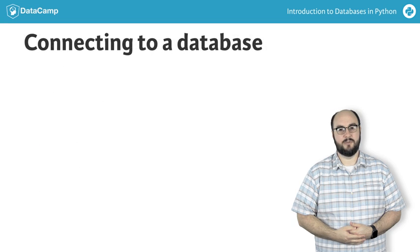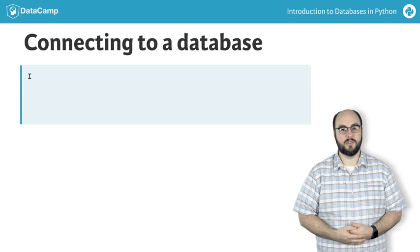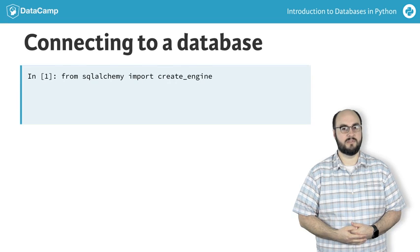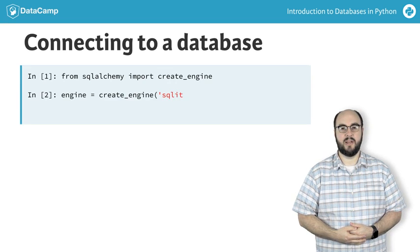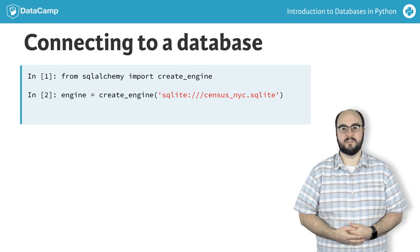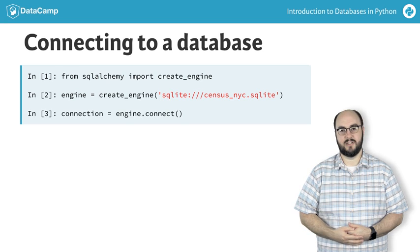To connect to a database, we need a way to talk to it, and an engine provides that common interface. To create an engine, we import the createEngine function from SQLAlchemy. We then use the createEngine function and supply it a connection string that provides the details needed to connect to a database. Once we have an engine, we're ready to make a connection using the connect method on the engine.